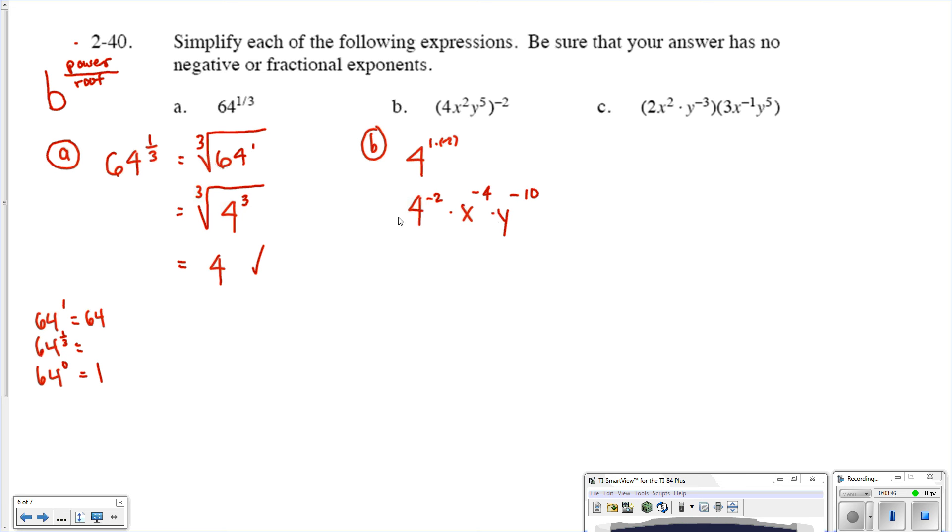Now, each of these is like its own separate statement. We can take 4 to the negative second and rewrite it as 1 over 4 to the positive second power times x to the negative fourth, which is the same thing as 1 over x to the positive fourth power, and y to the negative tenth power is the same thing as saying 1 over y to the positive tenth.